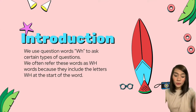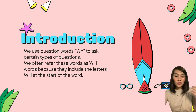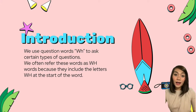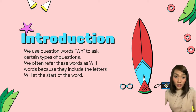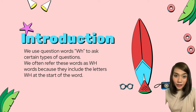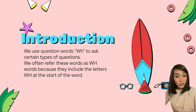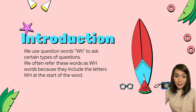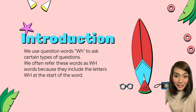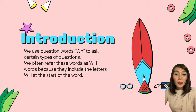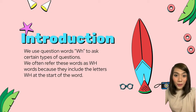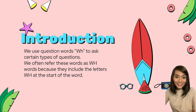Now, we use the words 'WH' — what, where, when, why — to ask certain types of questions. We often refer to these words as WH words because they include the letters WH at the start of the word. We call them WH questions because we usually start the sentence with WH as a spelling. Those are the most common words that we use: when, where, why.